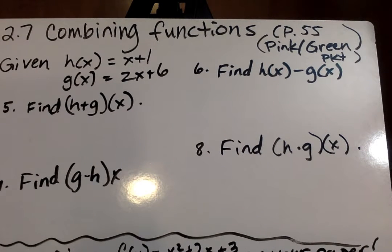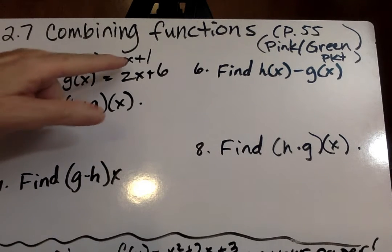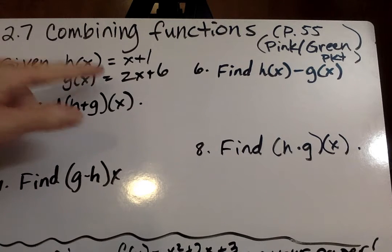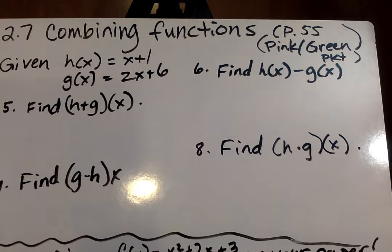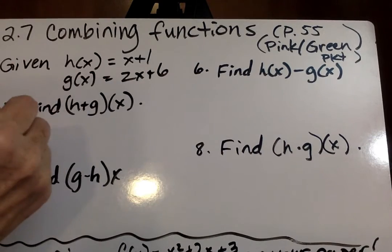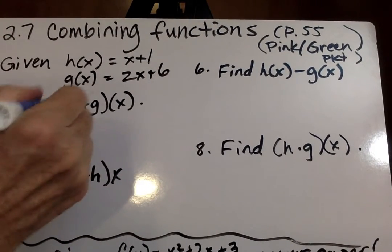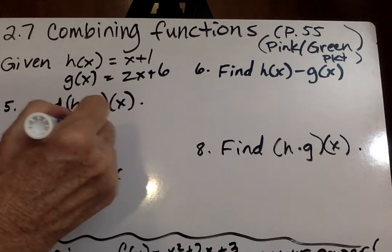So we're going to be combining functions. This is on page 55, so you want to turn your paper over on page 55, where it says here we're given h of x equals x plus 1, g of x equals 2x plus 6. So we're going to go ahead and add the two together. So I'm going to write down h of x, that's x plus 1, and I'm going to add g of x 2x plus 6.